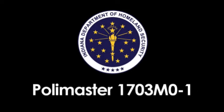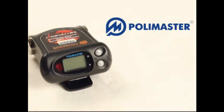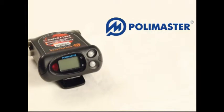The PolyMaster PM1703M0-1 Personal Radiation Detector is used for the detection and localization of radioactive materials. This tutorial will showcase the proper use and handling of this device.